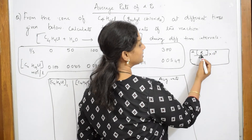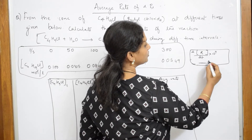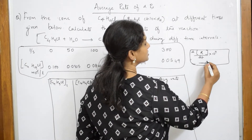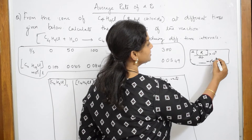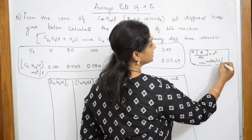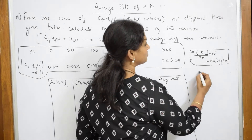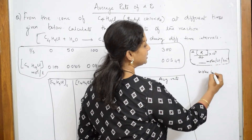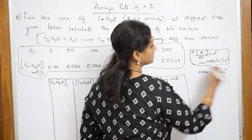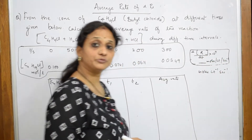You will be getting the answer. In that answer, the concentration terms are written as moles per liter and the time as seconds inverse. That means it is moles per liter per second — moles L⁻¹ s⁻¹. You multiply this after multiplying with 10 raised to 4. The most important thing is that the reaction rate decreases.